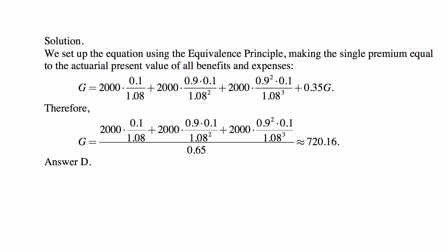This is an equation in which G is the unknown, so we move 0.35 to the other side: 1 minus 0.35 is 0.65. We then divide the right-hand side by 0.65, and that's how we get the answer. After doing all the calculations, it comes out to be roughly 720.16, and that's answer D. Please remember that this is copyrighted material, and good luck in your studies and on your test.